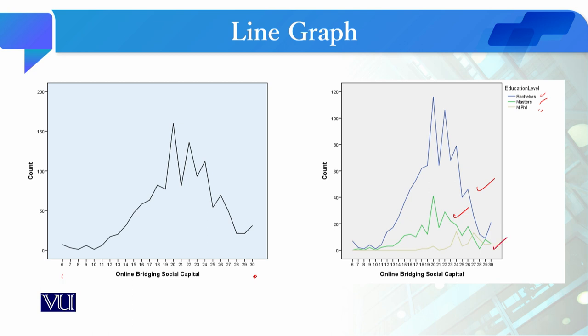So what could be the reasons for this? The first reason is that in this study, the frequency of bachelor students would be higher. So possibly when their frequency is higher, their score is also higher.